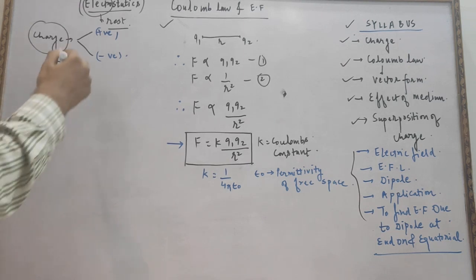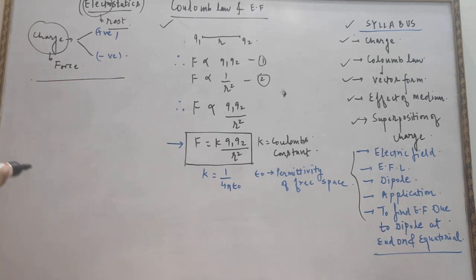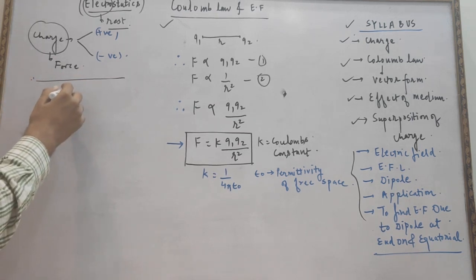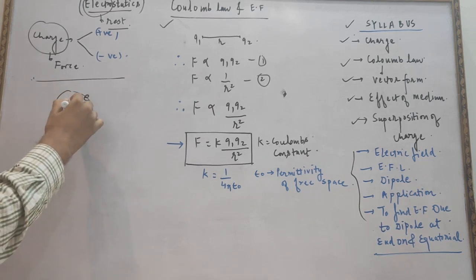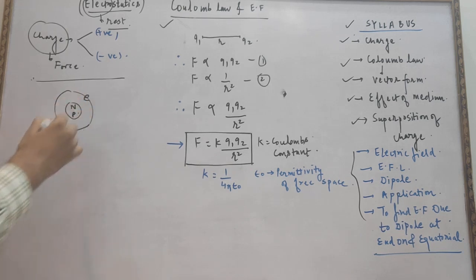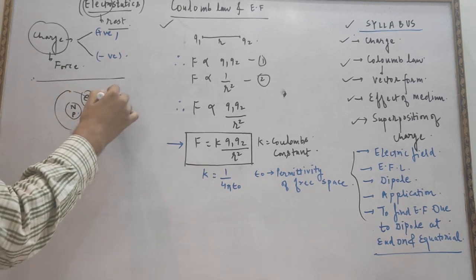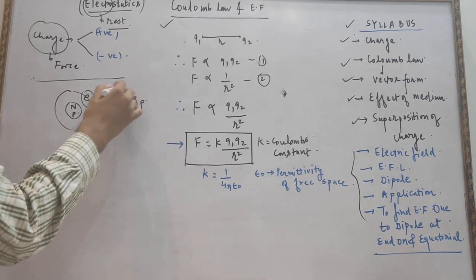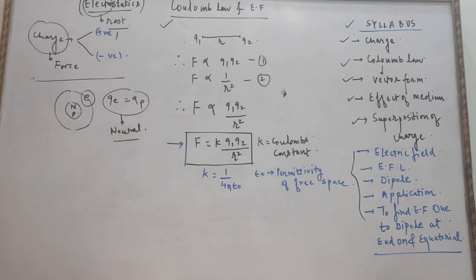How will the charge be created? How will it be generated? There is a modern theory of electrification. For knowledge purposes: inside the atom there is a nucleus; inside the nucleus there are neutrons and protons, and in the orbit, electrons are revolving. The charge of an electron equals the charge of a proton, so as a whole, an atom is electrically neutral.